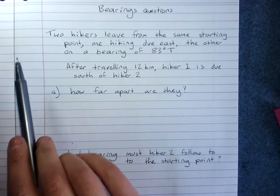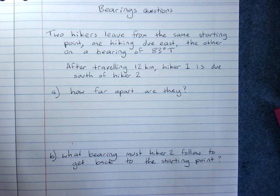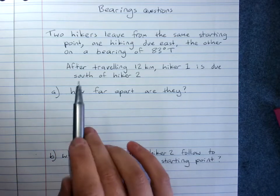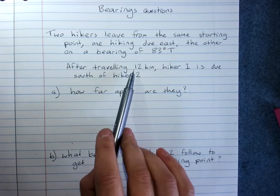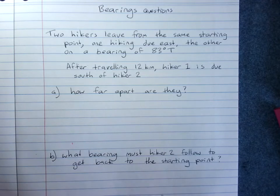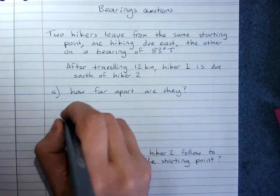Two hikers leave from the same starting point, one hiking due east, the other on a bearing of 83 degrees true. After travelling 12 kilometres, hiker 1 is due south of hiker 2. Part A: how far apart are they?